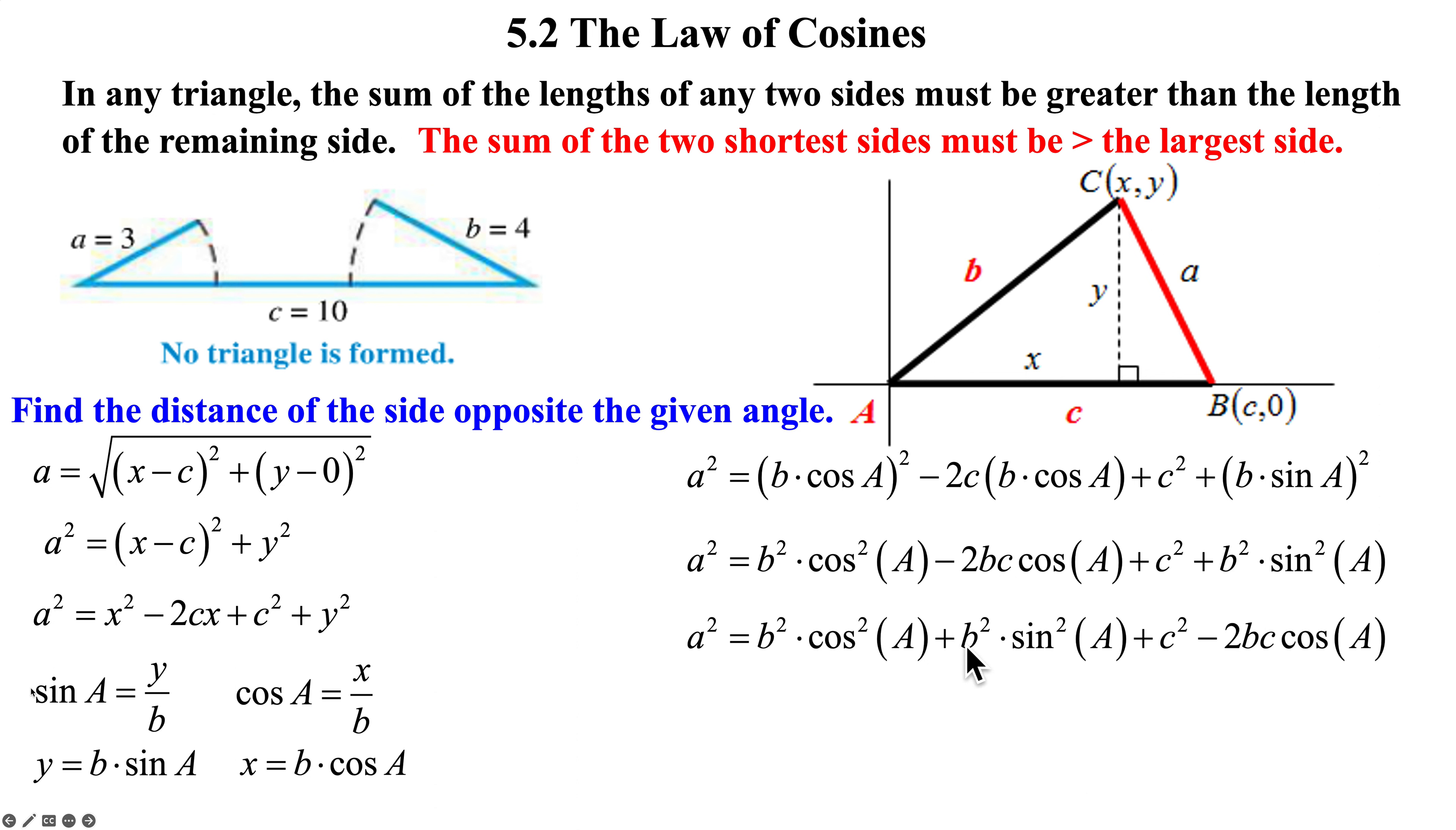So if we were to factor out the B squared just from these two terms, not everybody, just those two terms, we'll end up with cosine squared A plus sine squared A. This is a 1, and 1 times B squared will be just B squared. And now we have found the distance of A, because we could just take the square root of both sides. And notice everything on the right. B, C, and cosine A. All the three parts that were given. This is called the law of cosines.